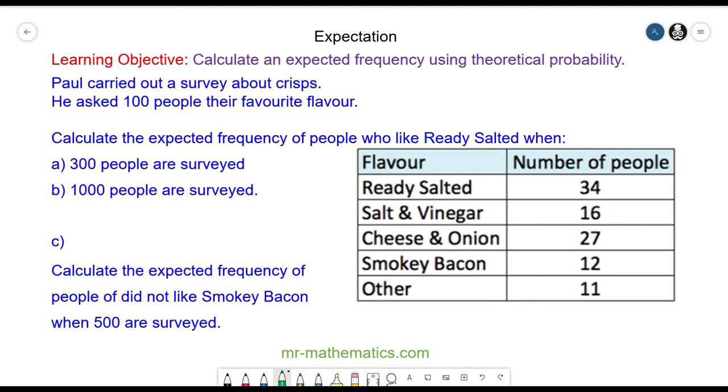Paul carried out a survey about crisps. He asked 100 people their favourite flavour. Calculate the expected frequency of people who liked Ready Salted when 300 and 1000 people were surveyed. You can pause the video and try questions A and B, then resume when you're ready.